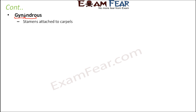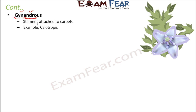The third type is gynandrous. From the name itself you can make some guesses: 'gyn' is derived from gynoecium and 'androus' from androecium. So it has something to do with gynoecium and androecium — stamens attached to carpels. The gynoecium is made up of carpels, and the androecium consists of stamens, so stamens and carpels are attached together — that is known as gynandrous. An example is calotropis. In the calotropis flower, at the exact center you have the gynoecium or carpels, and the stamens are attached to them, as you can see in the picture.